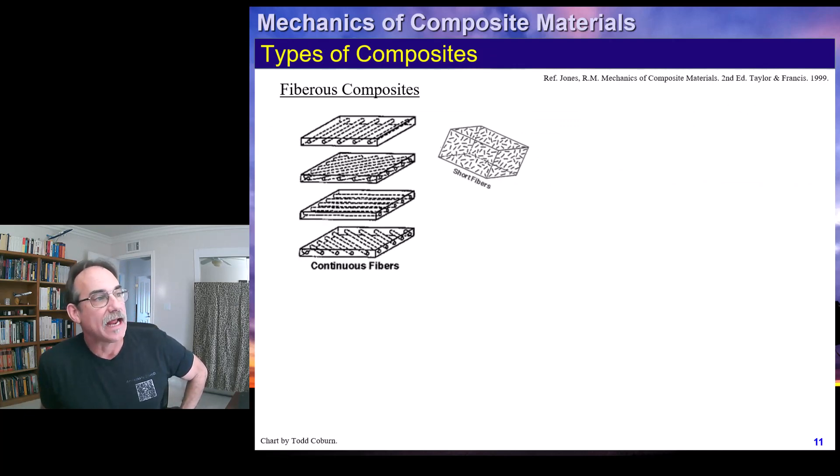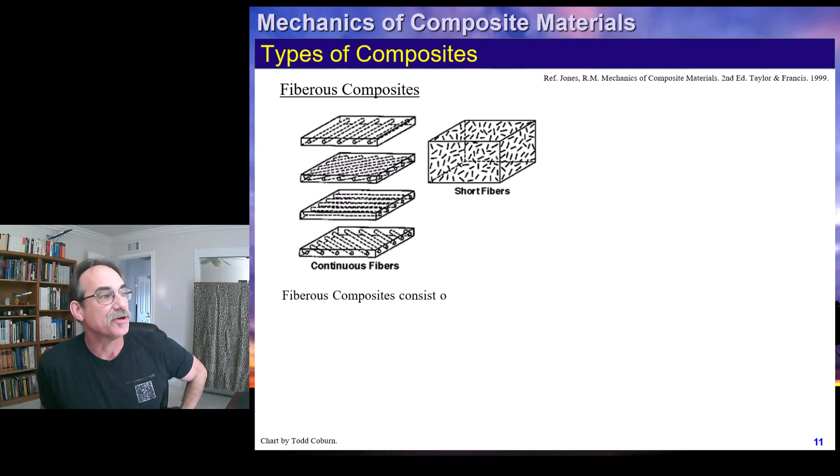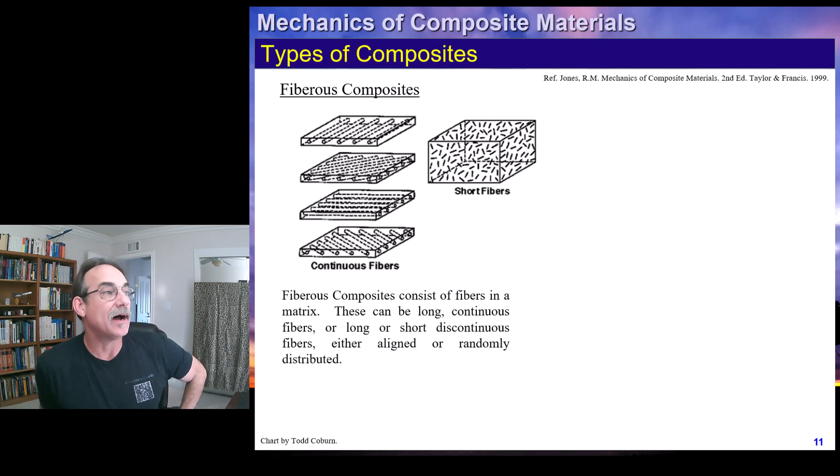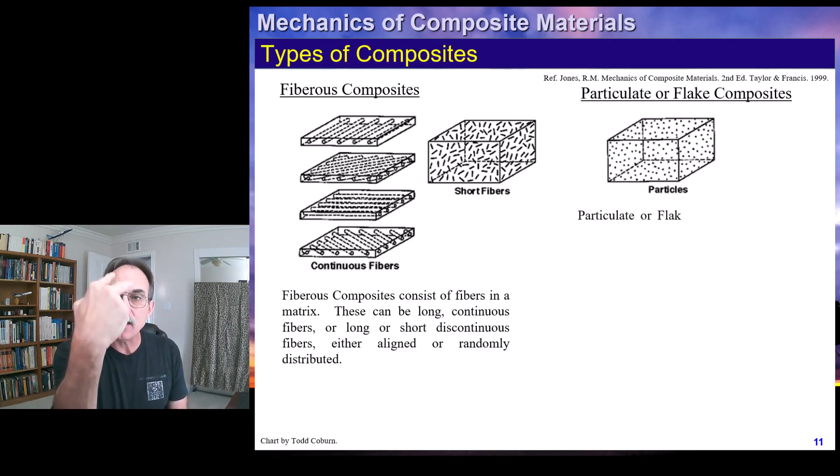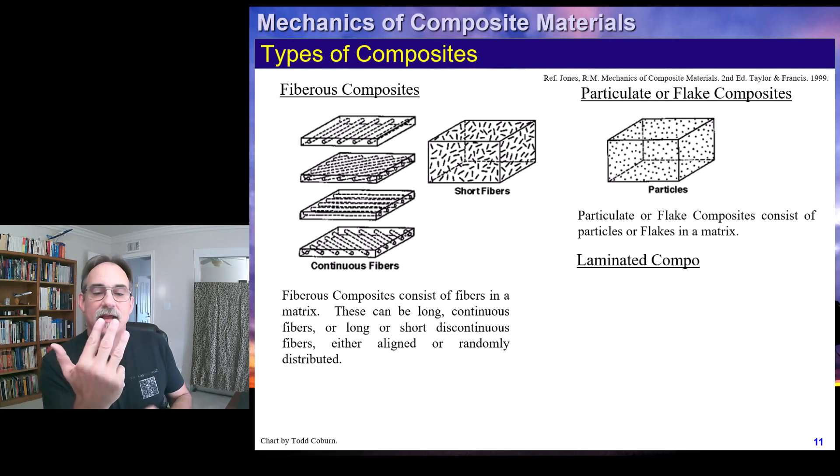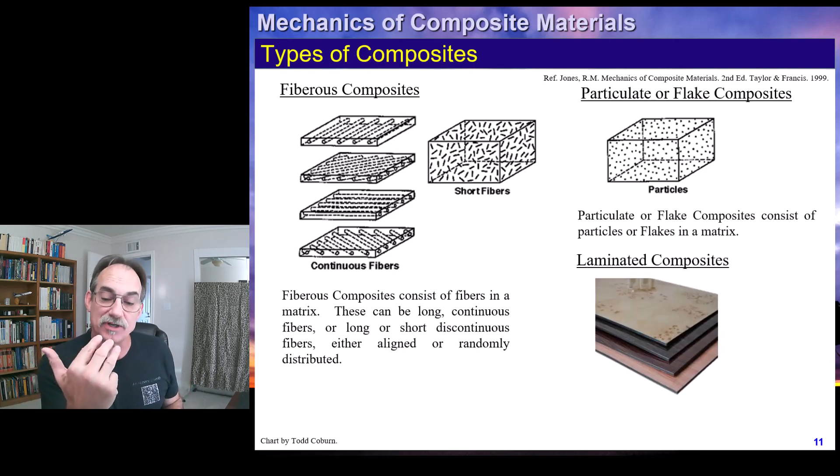Alright, so taking a little further look, we're going to actually pull this slide up next lecture as well. Here are some fibrous composites. So we see here we have a one, two, three, four layer composite. We see these are fiber reinforced products. Now it looks like these fibers are sitting out here in the middle of the resin with all this gap between them. Not so.